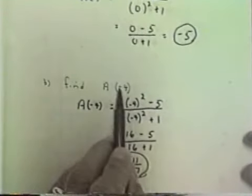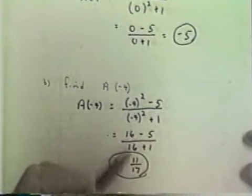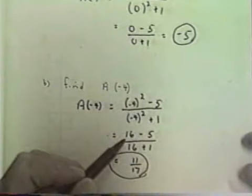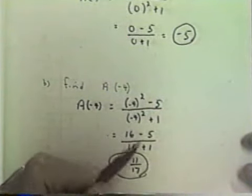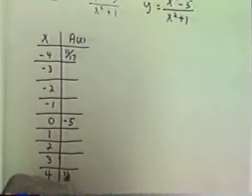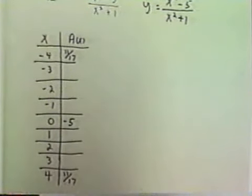Now if we notice if I replace a negative 4 by positive 4 it's going to be the same answer. Because a positive 4 squared is also 16. So I end up with the same thing. So I also know that for x equals positive 4 the answer is 11 seventeenths.